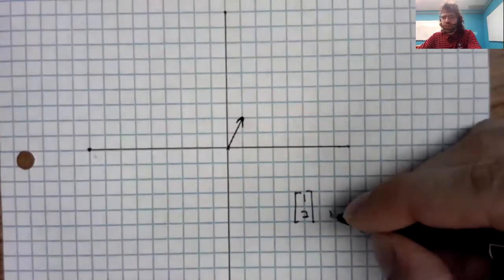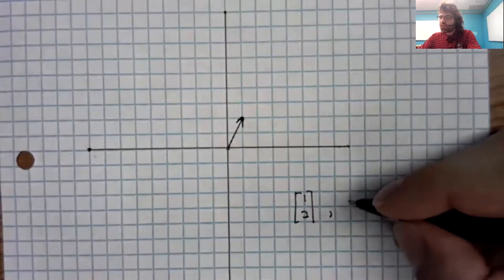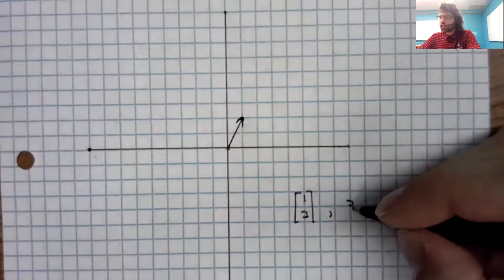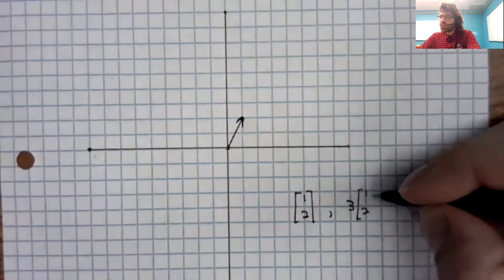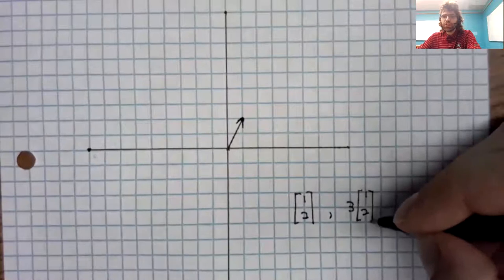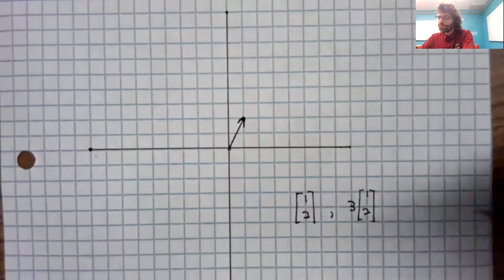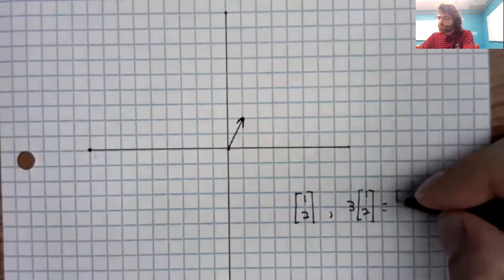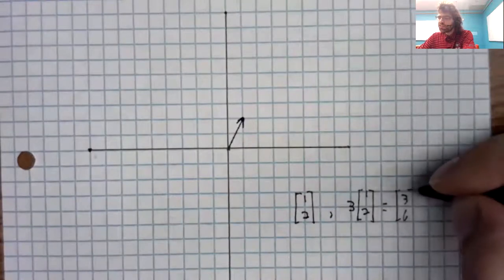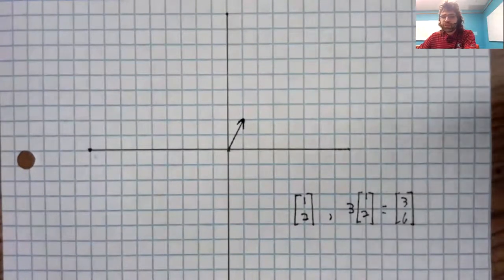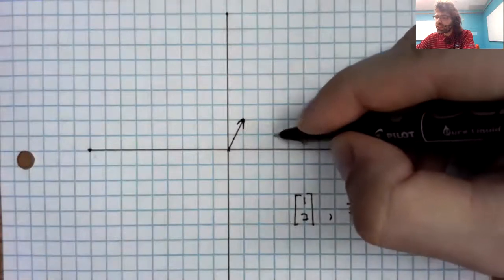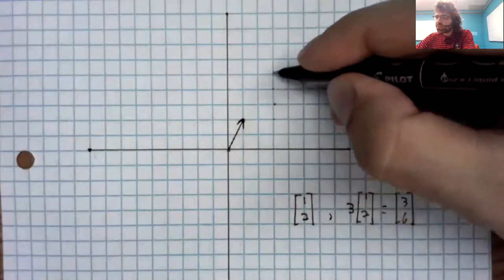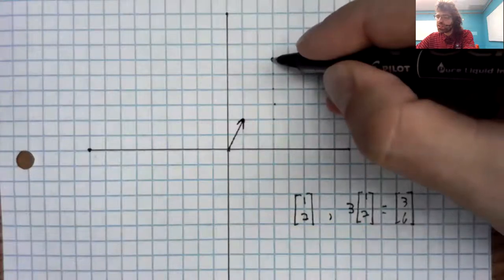Now let's look at a different vector. The scalar product three times [1,2]. Well, this is the vector [3,6], and we can represent that graphically. The point three six is here.